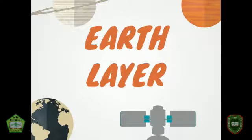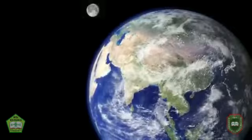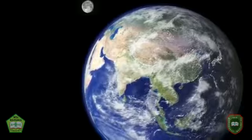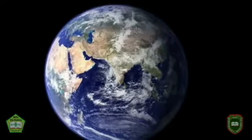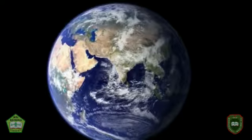There is a layer of atmosphere that covers the Earth. The atmospheric layer consists of the troposphere, stratosphere, mesosphere, thermosphere, and exosphere. In addition, there is also a layer of Earth from the surface of the Earth to the center of the Earth on the inside.